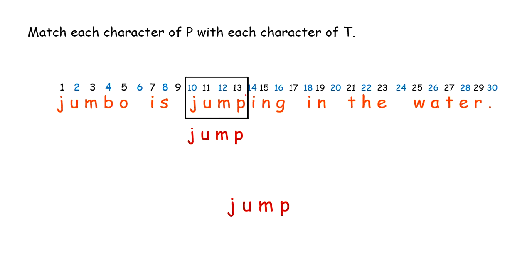Now what will the algorithm return? It returns the position in the text where 'jump' was found — the index number of the first character. That is 10. So we return value 10. Simple — we match one by one.